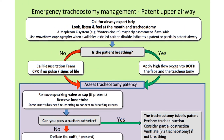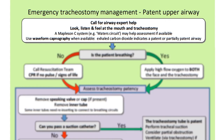Starting at the top of the algorithm, the first step is to call for help. Next, as in any life support situation, assess the airway and the breathing. Bear in mind, tracheostomy patients will have two airways — their own upper airway and their tracheostomy. Assessment is by looking, listening and feeling for breathing at the patient's mouth and at the tracheostomy tube or stoma for 10 seconds. Before you do this, you need to apply basic airway manoeuvres to open the upper airway: head tilt, chin lift, or a jaw thrust.